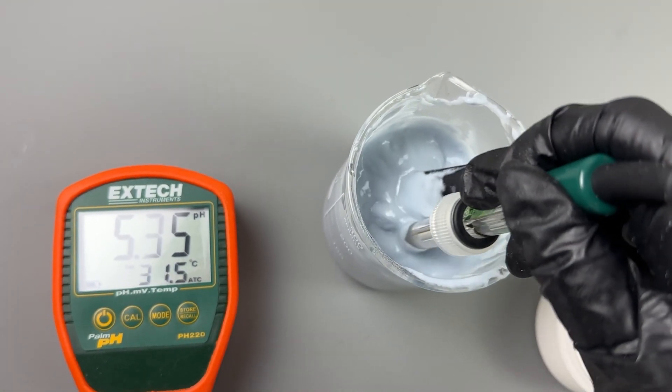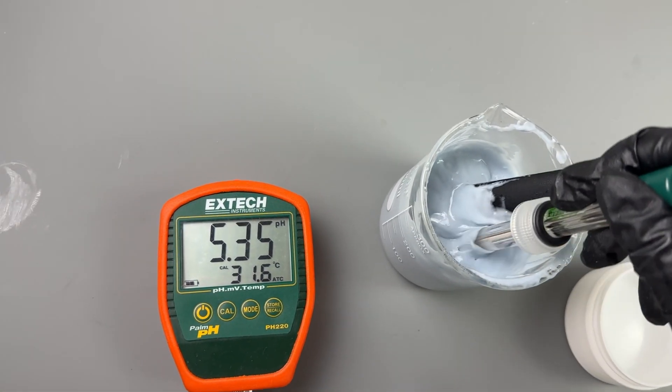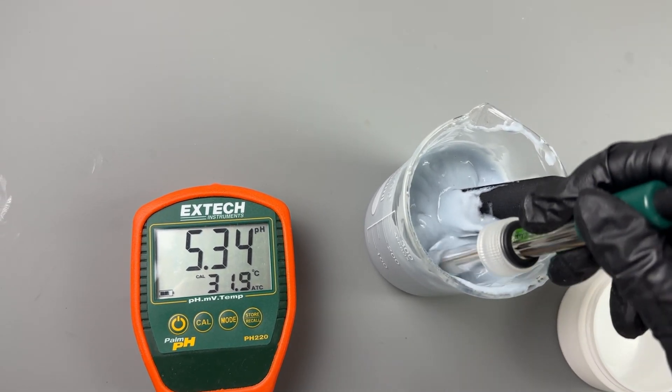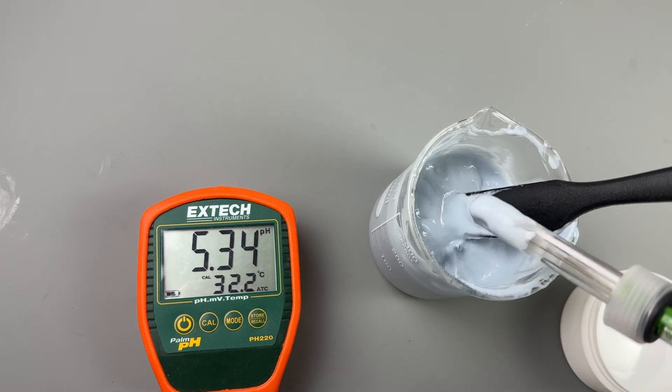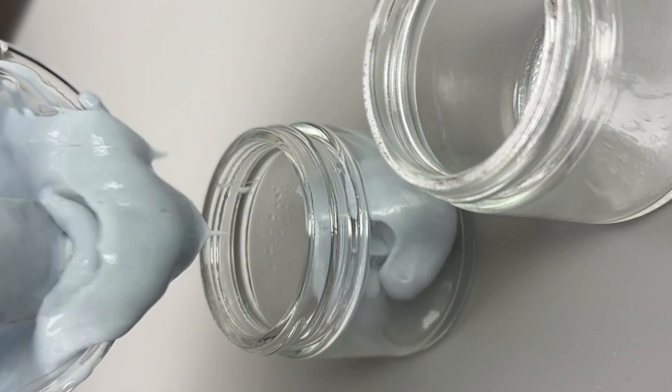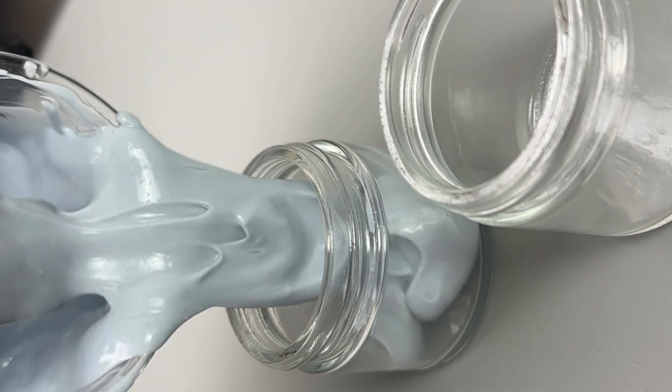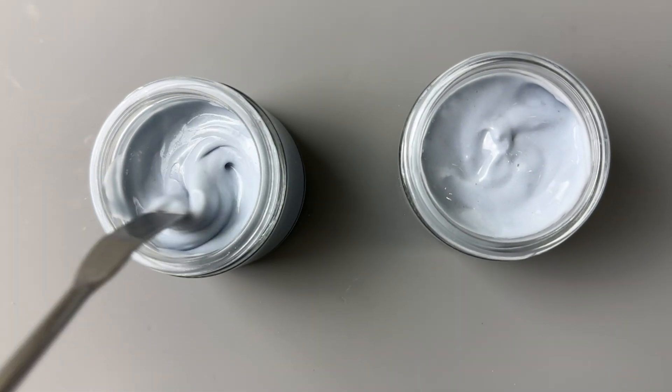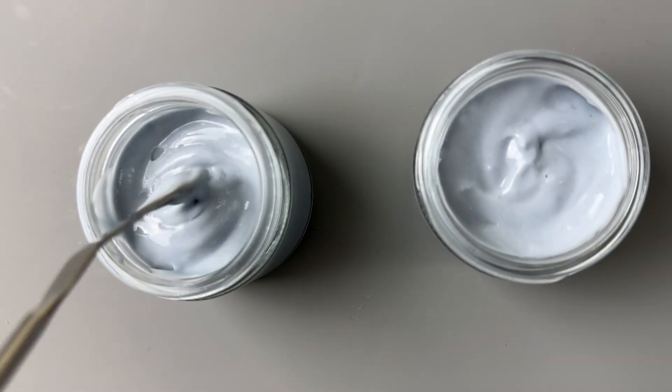In a clinically proven study, it showed within just two weeks skin was visibly smoother. It reduces flakiness, improves skin hydration and skin comfort. It is a clear yellowish slightly viscous liquid and is water soluble. Again, the usage rate is very important. You want to make sure you're using the correct percentage to see the results.